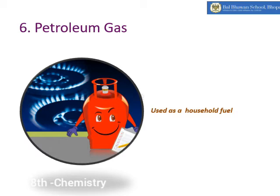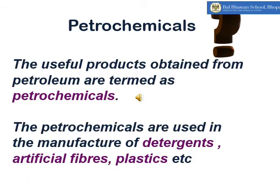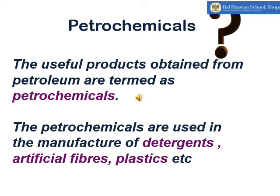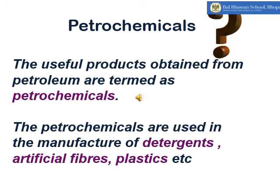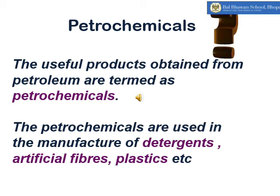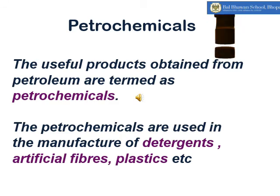Liquefied petroleum gas (LPG) is obtained by compressing petroleum gas under high pressure and low temperature, and is widely used as a household fuel. The useful products obtained from petroleum are termed petrochemicals, which are used in the manufacture of detergents, artificial fibers, plastics, and more.